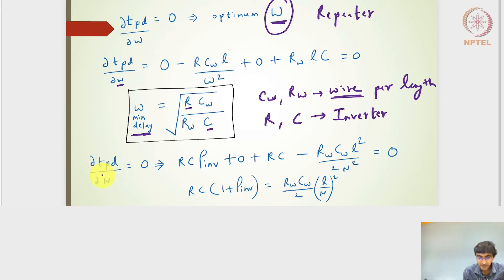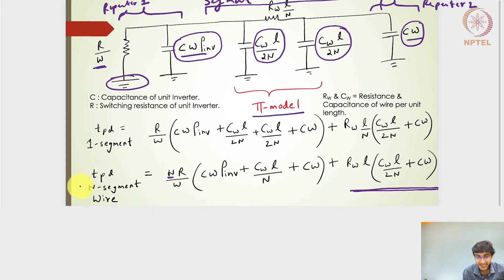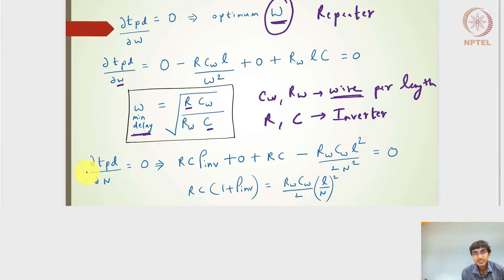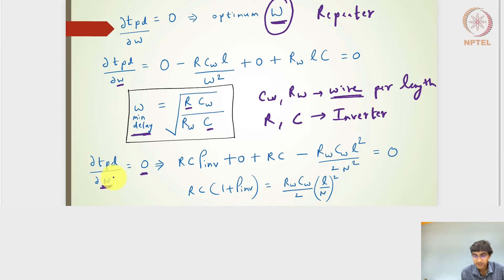Going back to the delay expression for n segments — it is a function of both w and n. By differentiating the propagation delay with respect to n and equating to zero, we can find the best l/n factor. Differentiating with respect to n while treating l as fixed gives us the optimal n value, which we can re-express as the optimal l/n.